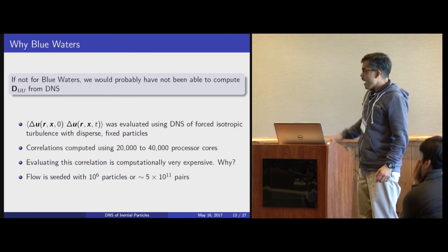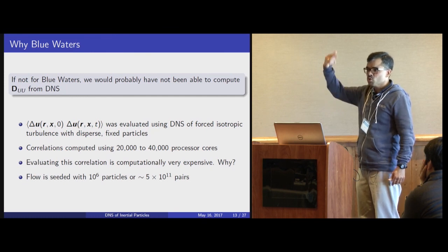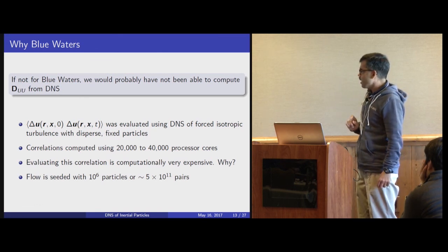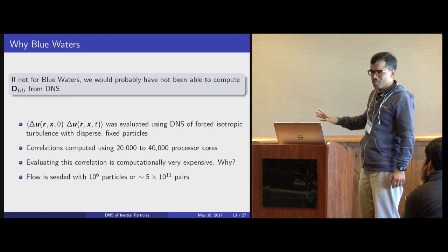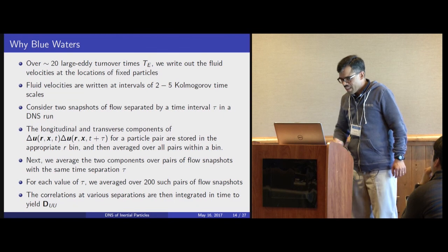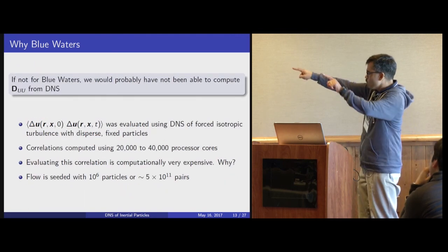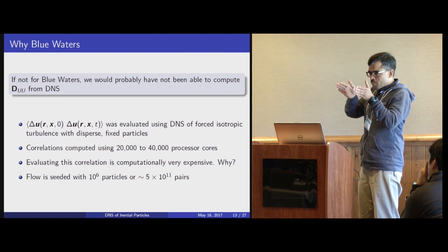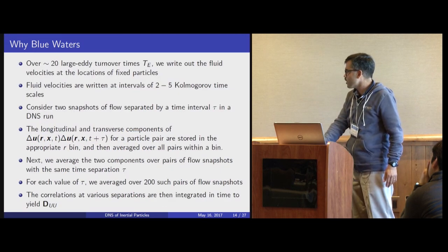The Eulerian two-time correlation was computed using DNS of forced isotropic turbulence with dispersed fixed particles. To compute these correlations, we considered one million particles, which means approximately five times ten to the power of eleven particle pairs — half a pico or something. To compute these correlations, we used anywhere from 20,000 to 40,000 processor cores. This is very computationally intensive, not least because of the number of particle pairs involved. The ensemble average represents averaging over particle pairs, as well as over snapshots with a fixed time separation — a very time-consuming process.